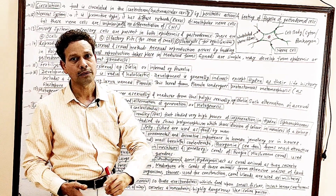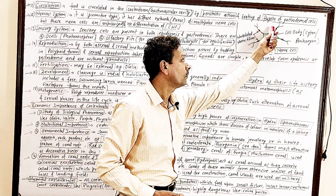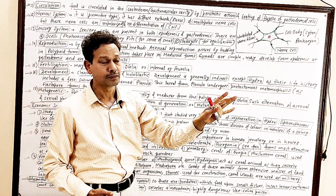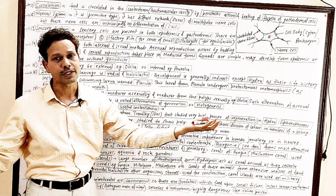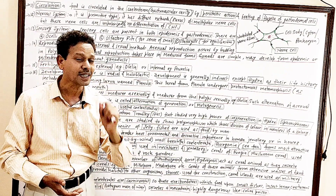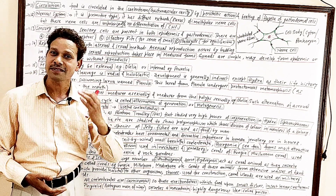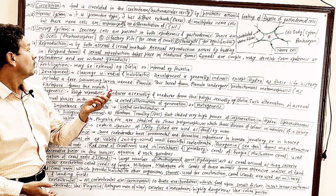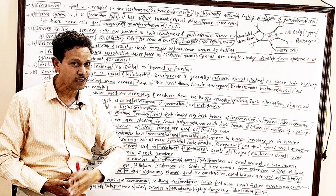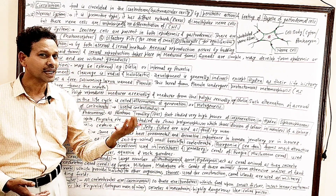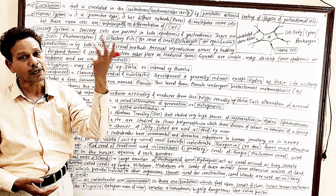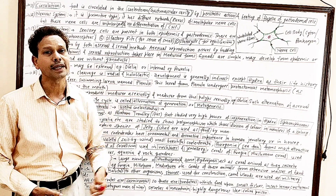These nerve cells are unpolarized because there is no differentiation of dendrites and axons, and there is no differentiation of a central nervous system. In cnidarians, the nervous system appears for the first time and it is of a simple, primitive type. The sensory system consists of sensory cells present in both the epidermis as well as gastrodermis.